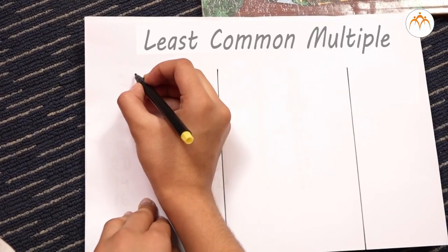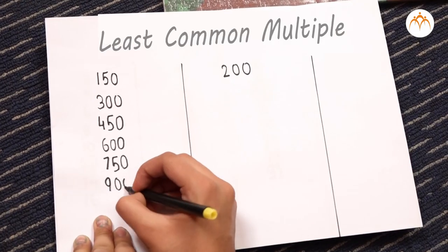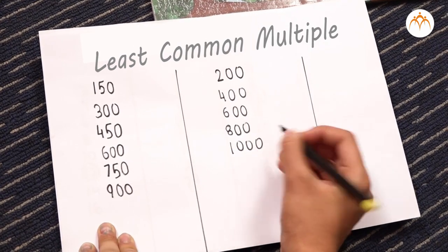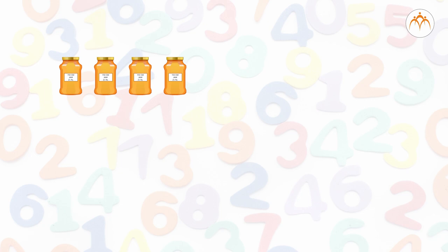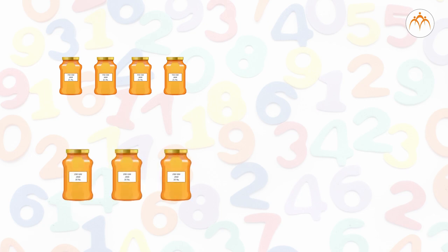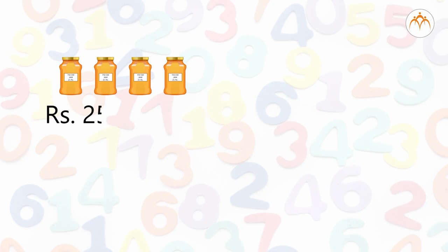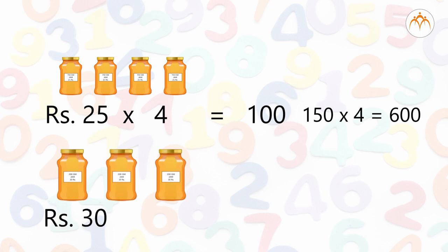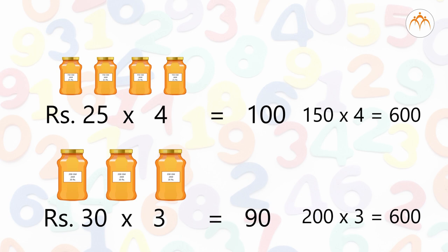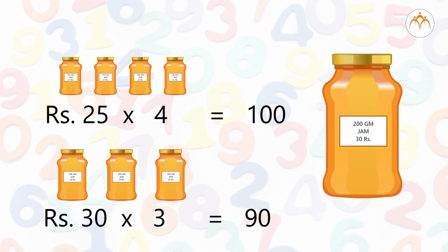LCM of 150 and 200: tables of 150 are 150, 300, 450, 600 ... and tables of 200 are 200, 400, 600. So LCM of 150 and 200 is 600. This means if I buy 4 bottles of 150 gram or 3 bottles of 200 gram, I will have 600 grams of jam. Now find out their prices. Four bottles of 150 gram at Rs. 25 each will cost Rs. 100. Three bottles of 200 gram at Rs. 30 each will cost Rs. 90. That means the second type of jam costs Rs. 90 for 600 grams, but the first type costs Rs. 100 for 600 grams. So it is beneficial to buy the second type of jam.